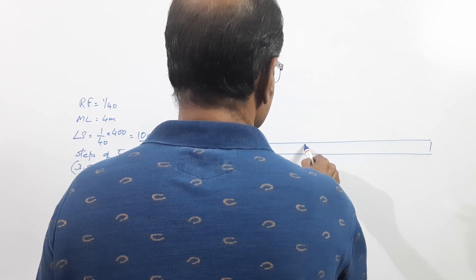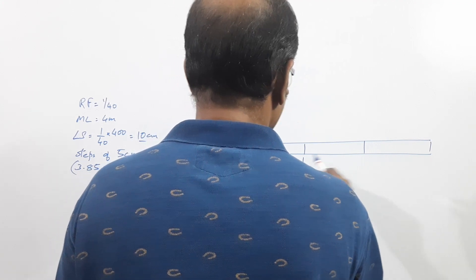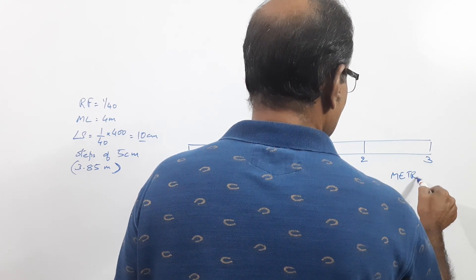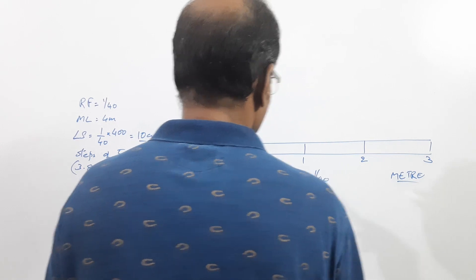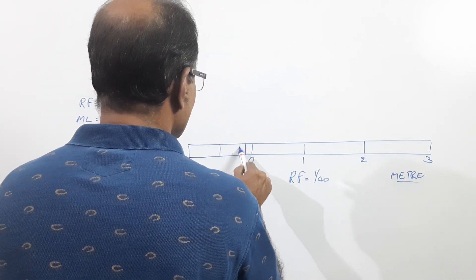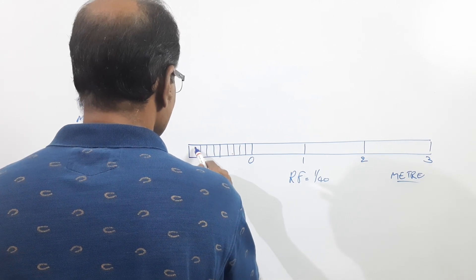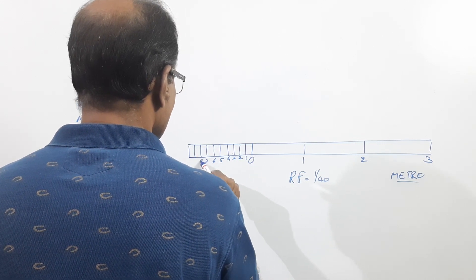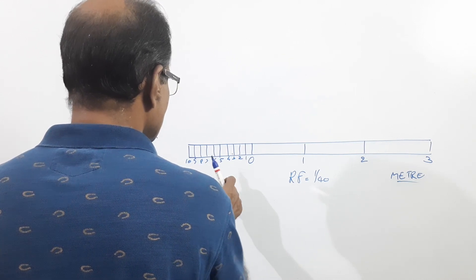Divide this into four equal parts: 0, 1, 2, 3, unit meter. RF of 1 by 40, divide the leftmost division into 10 equal parts so that each division is 1 decimeter.